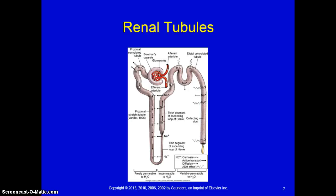Glomerular filtration rate, or GFR, is controlled by blood pressure and blood flow, and it allows the kidneys to self-regulate renal blood pressure and renal blood flow. It is controlled by selectively constricting and dilating the afferent and efferent arterioles. Typically, the tubules return about 99% of all filtered water back into the body.